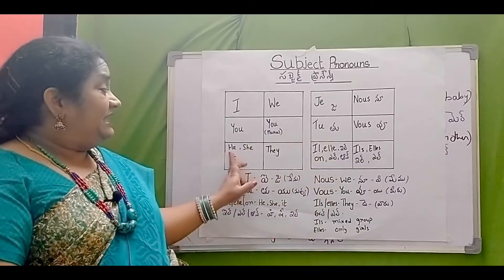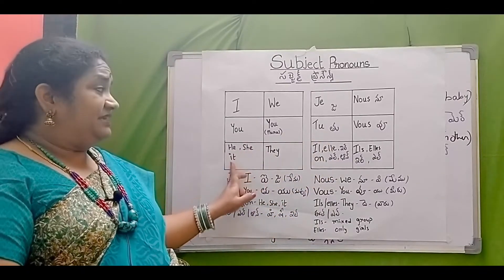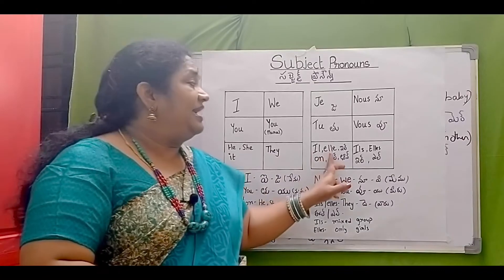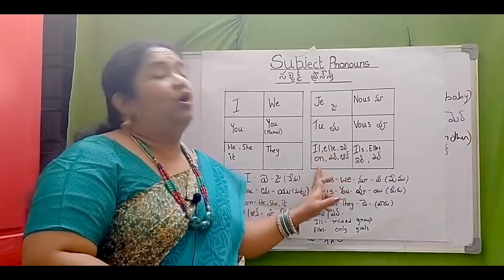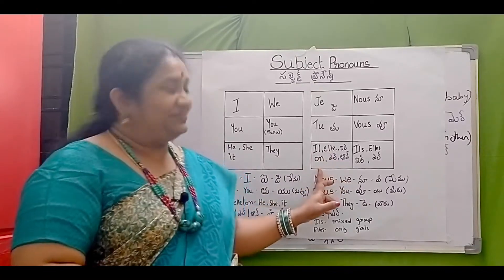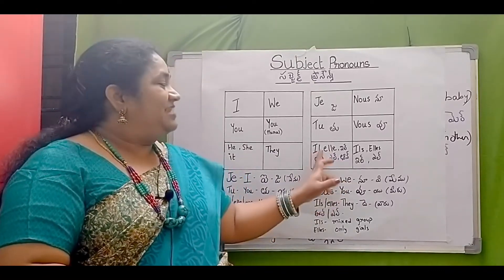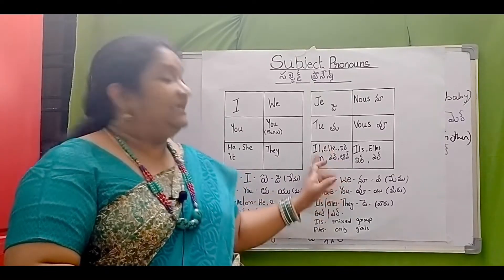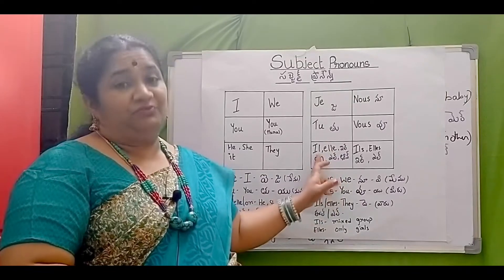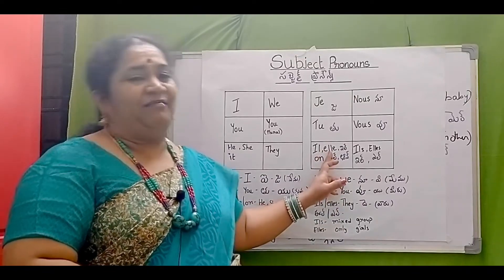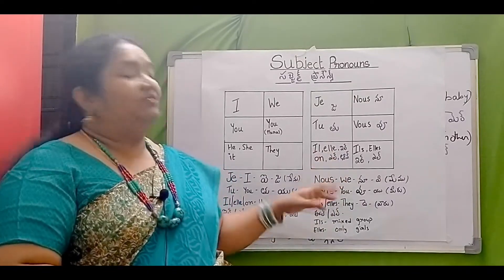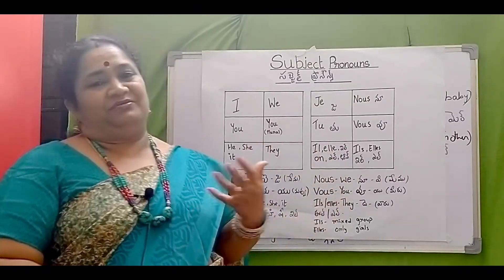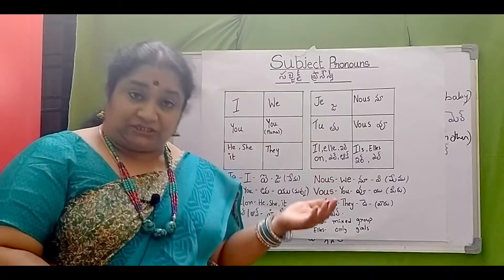He, she, it: il, elle. Okay, il means he, elle means she. On is like a general pronoun — let's do it.